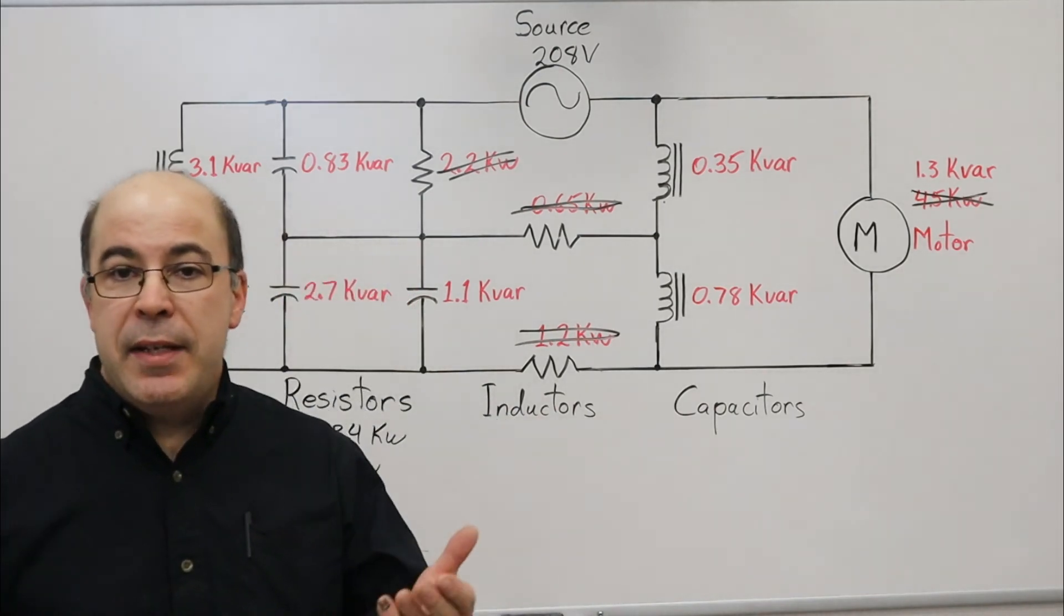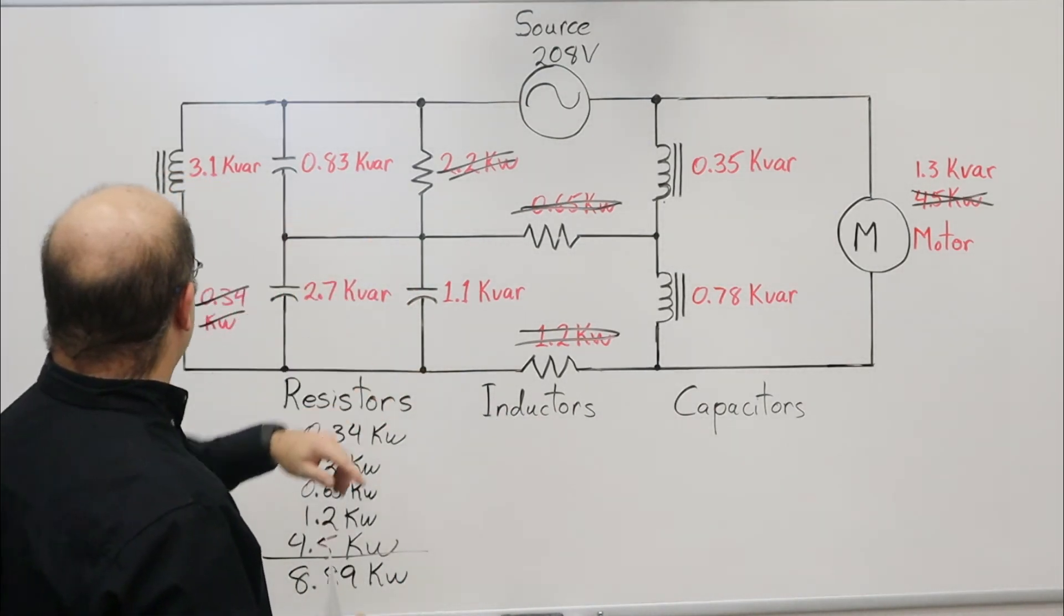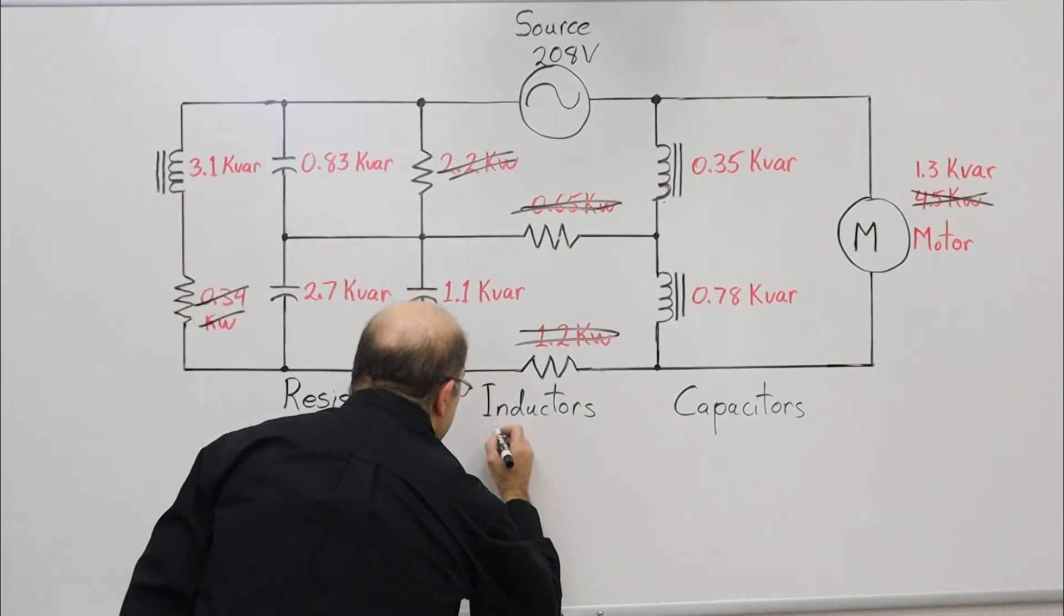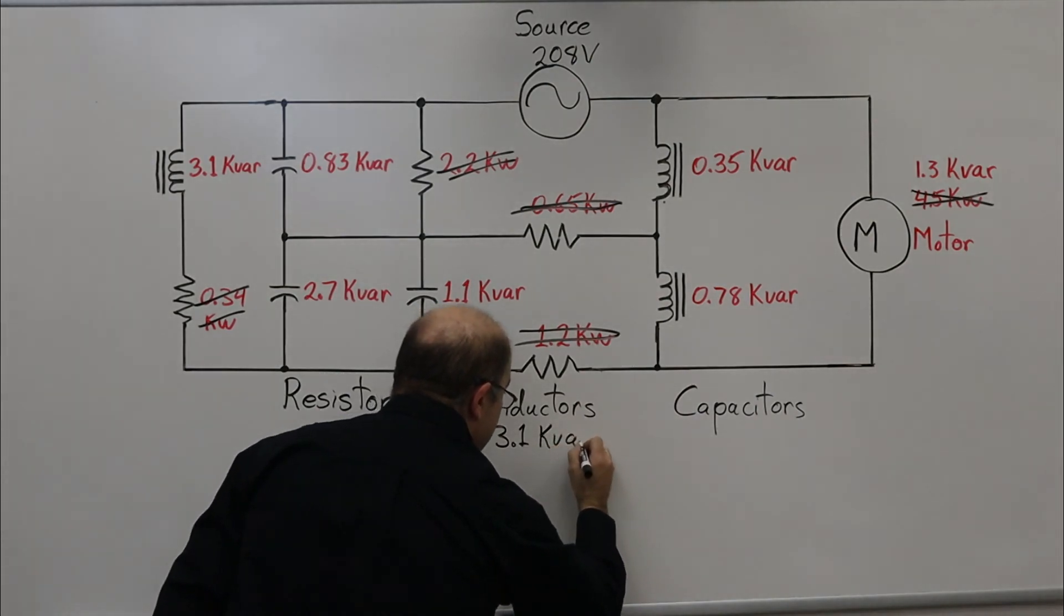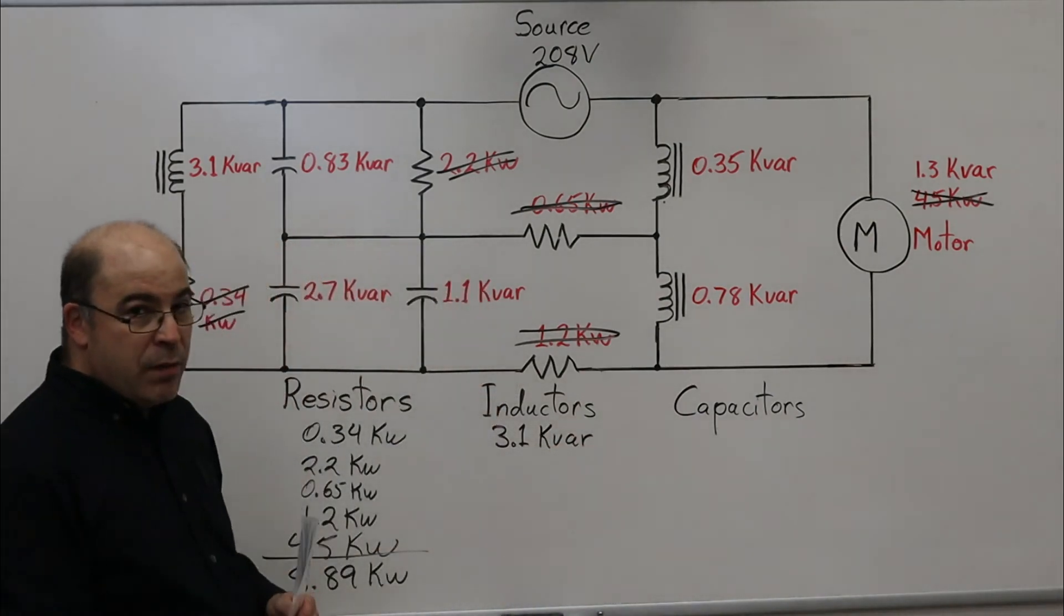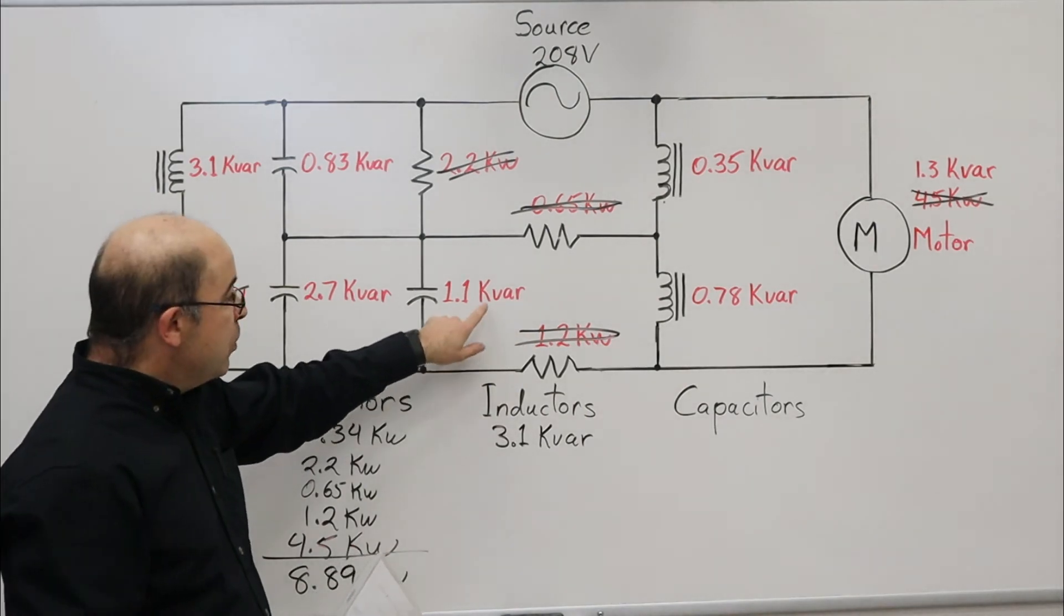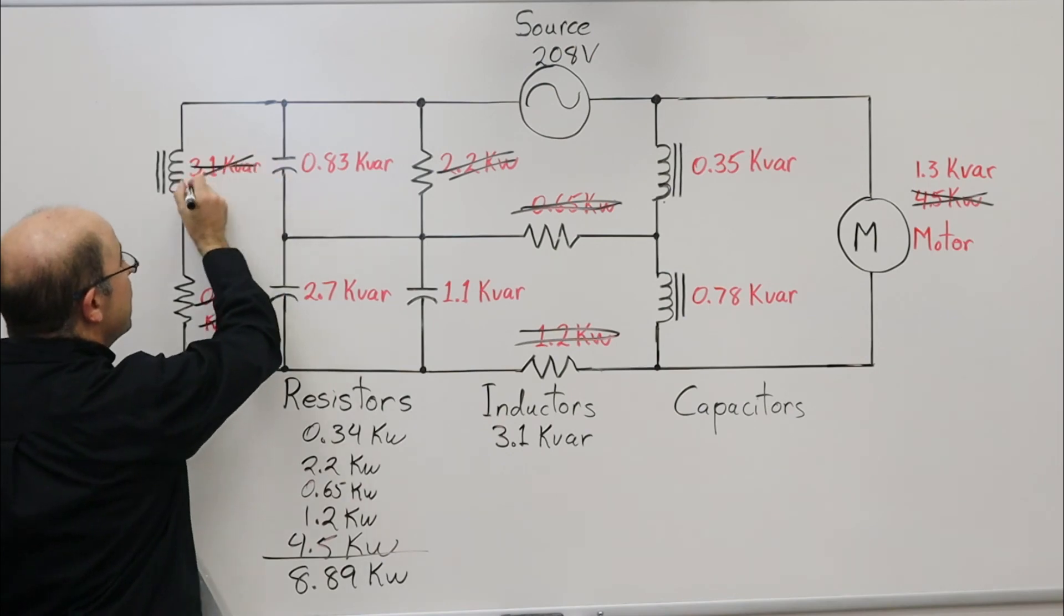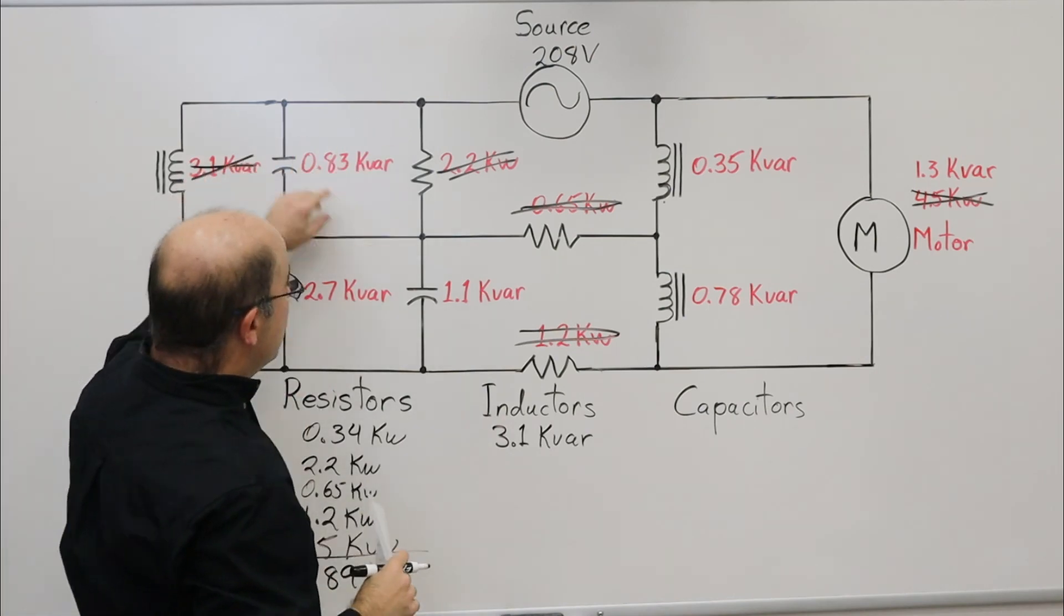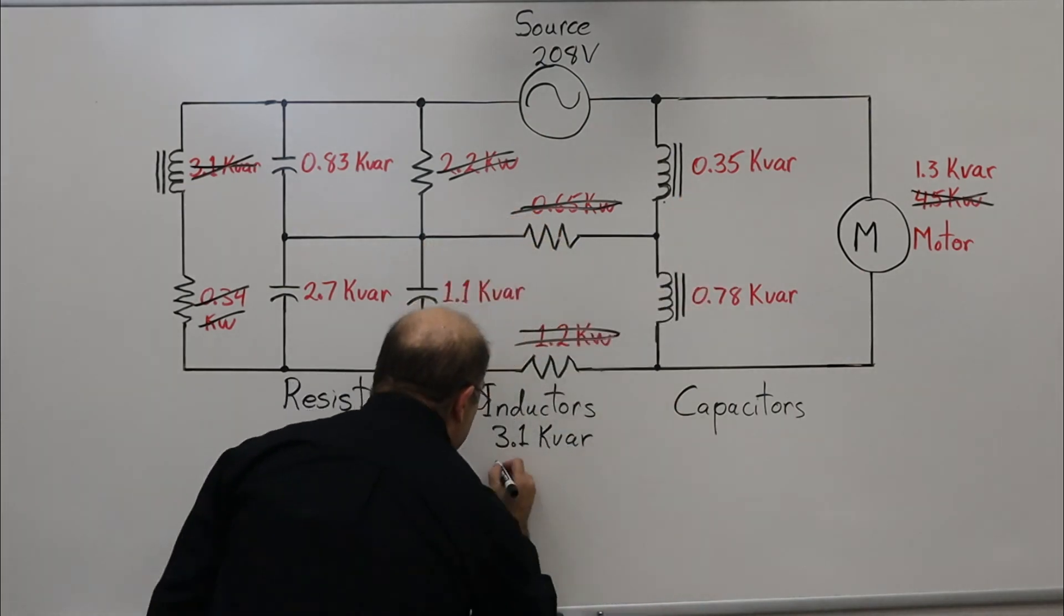Let's work on the inductors next. Working again from left to right: 3.1 kVAR. It's kind of handy that all the values in this circuit were in the same engineering notation, most notably kilo. Where's the next inductor? 0.35.